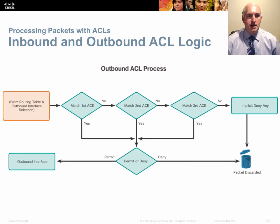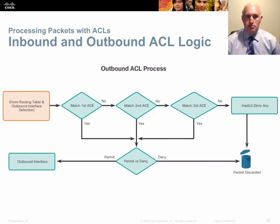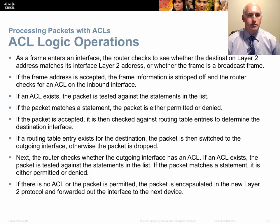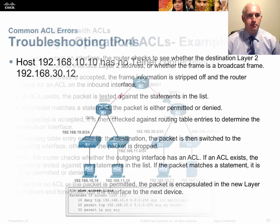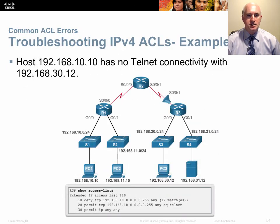On an outbound ACL it's quite different — the packet first arrives on the ingress interface, is routed, switched to the outgoing interface and queued, and only then compared to the ACL process. It's coming out of all that routing logic within the router before being compared to the statements.